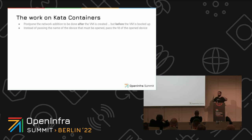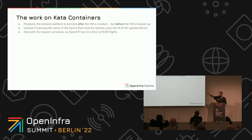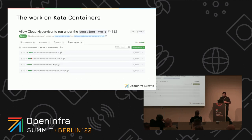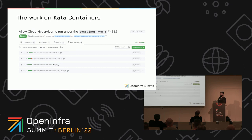On the Kata Containers side, we had to postpone the network device addition to after the VM is created but before it is booted, so we can pass the file descriptor — not the name — down to Cloud Hypervisor. Because if you pass the name, Cloud Hypervisor will try to open the device by name and fail. Because of OpenAPI limitations, we had to handle the request ourselves since OpenAPI has no notion of sending and receiving socket control messages. This work is still in review with good feedback, and I hope to get it merged next week.